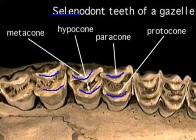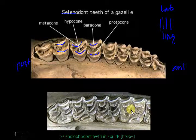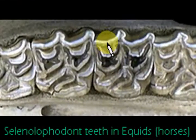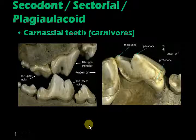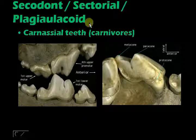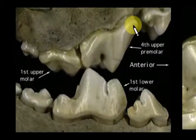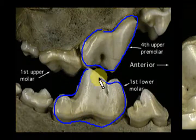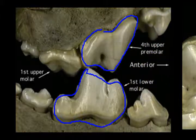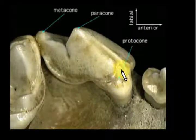Equids or horses have a special type: it's still lophodont dentition, but because they also have crescent shapes, it's a combination of selenodont and lophodont — called selenolophodont. For animals that specialize in eating meat, they have secodont or sectorial dentition. Plagiaulacoid is a special type for some herbivores but also promotes a slicing or shearing motion. For carnivores, this is best expressed by the carnassial teeth — always the fourth upper premolar and first lower molar — and they still have named cusps: protocone, paracone, and metacone.